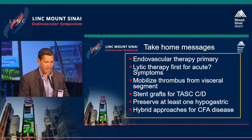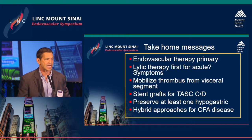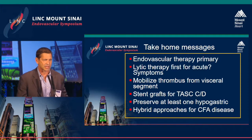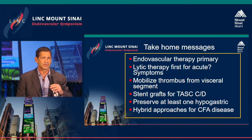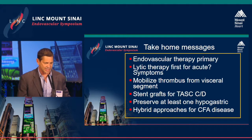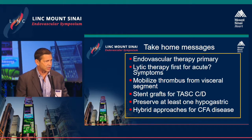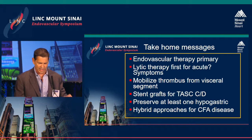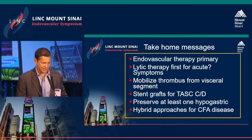Take-home points: we do this endovascular when possible; lytic therapy if it's acute; mobilizing thrombus away from the visceral segment before stenting is advisable; stent grafts appear favorable, though recent third-generation bare metal stents are becoming quite comparable for complex disease; preserve at least one hypogastric; and be friendly with your surgeons if you're an endovascular specialist, because that can be quite helpful in challenging cases.